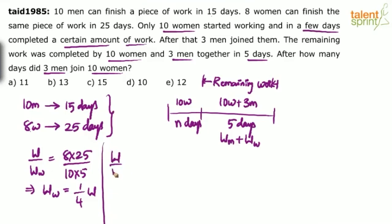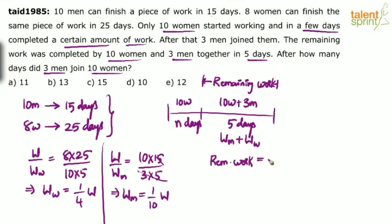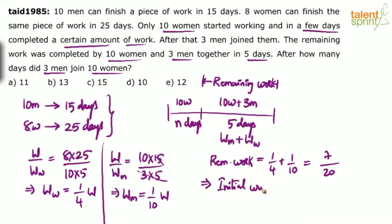Similarly, the work done by the 3 men: 10 men take 15 days for the total work, but here we have only 3 men working for 5 days, giving one-tenth of the total work. So the remaining work is one-fourth plus one-tenth. With LCM 20, that is 5 plus 2 over 20, which equals 7/20. Therefore, the initial work done by 10 women is 1 minus 7/20, which equals 13/20.